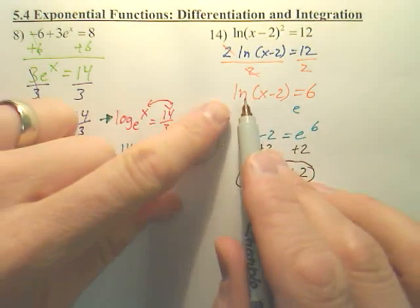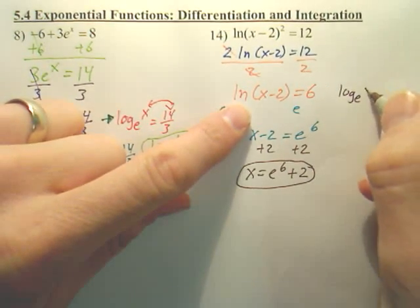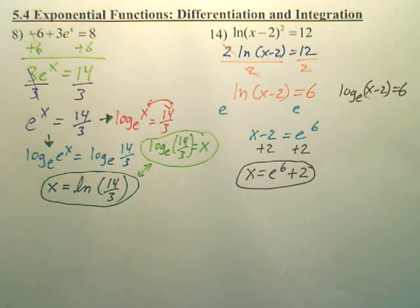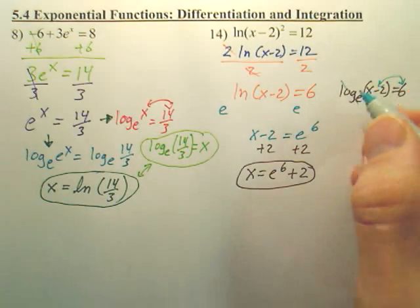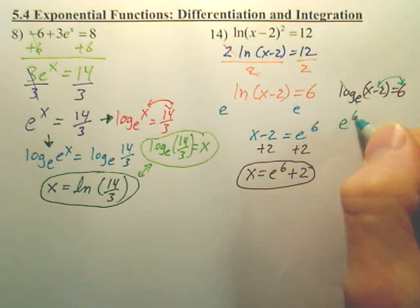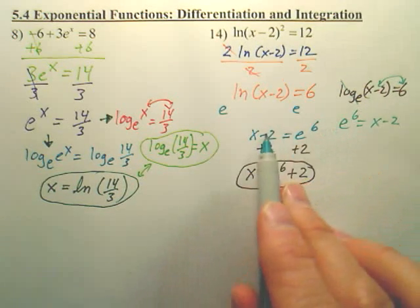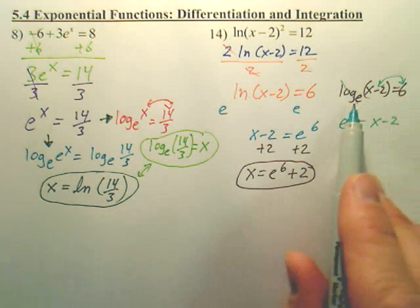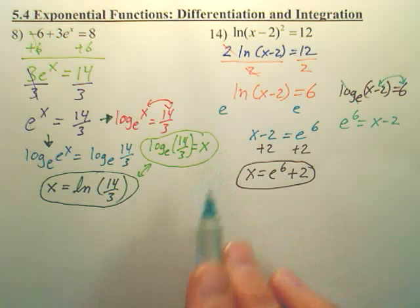Again, what I tend to do when I see this is I see this as log base e, x minus 2 equals 6. That's how I see it. And then all I do is go, okay, get rid of that, and then switch these two. So you drop the log, and you have e to the sixth equals x minus 2. And is this the same as this? Will they both solve the same way? This will give you that answer. So you can either just switch those two and drop the log, or you can exponentiate.